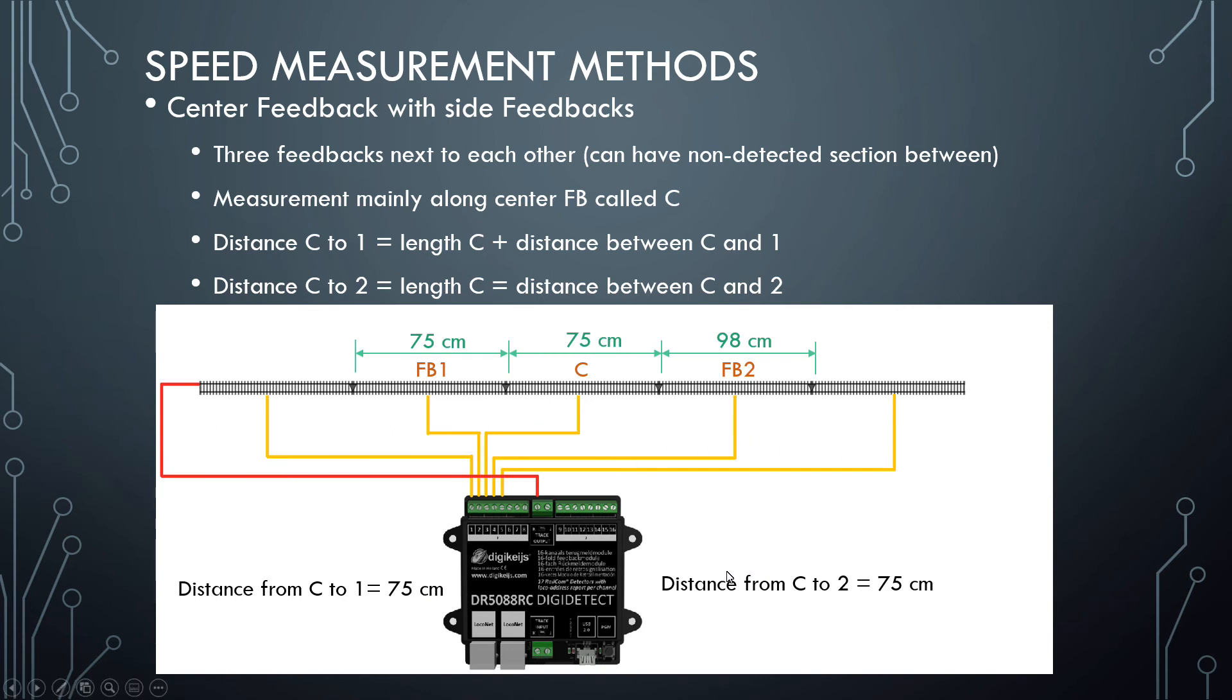And the same goes for the distance from C to two. So it's measured as the length of C plus the distance between C and FB2. And again, it is zero distance between the two. So the value that you enter here is just the length of C, 75 centimeters.